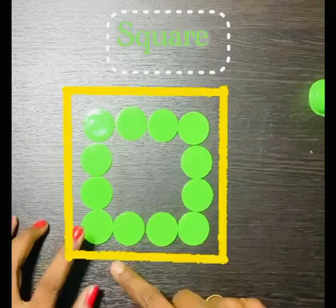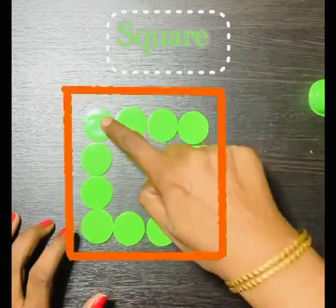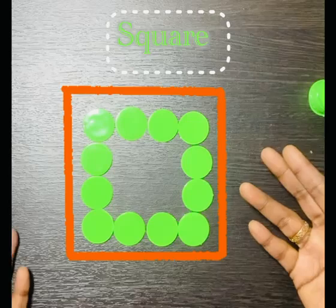It has 4 corners. 1, 2, 3, 4. All the 4 sides are equal.